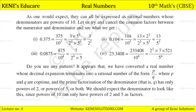As expected, these can all be expressed as rational numbers whose denominators are powers of 10. Let us cancel the common factors. For 0.375 = 375 upon 1000: the prime factors of 1000 are 2 cubed × 5 cubed, and 375 = 3 × 5 cubed. The 5 cubes cancel, giving 3 upon 2 cubed.